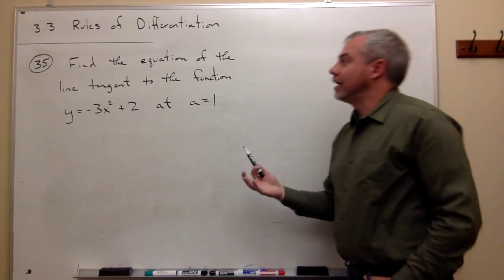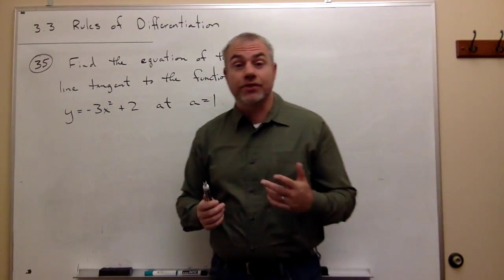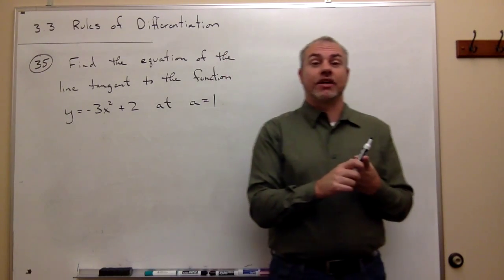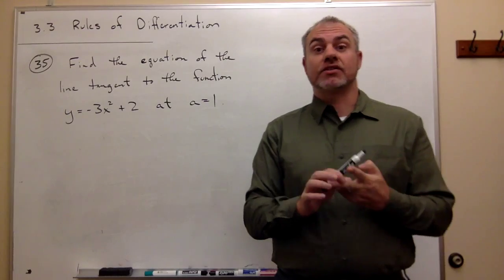To find the equation of a tangent line, we need two things: the point that the tangent line passes through and the slope of that line.